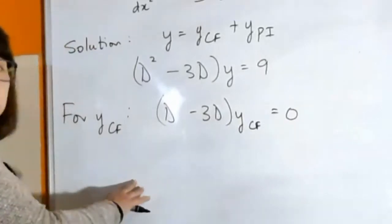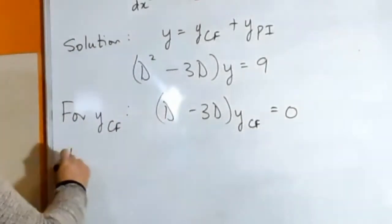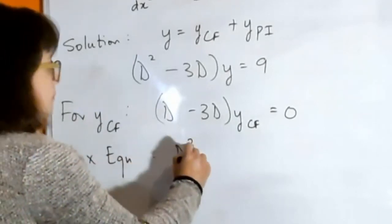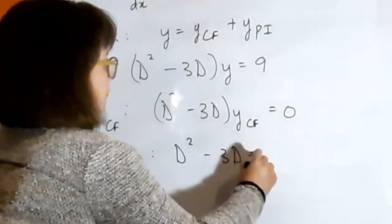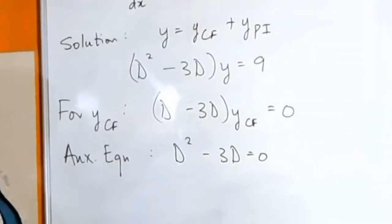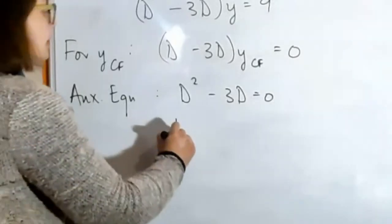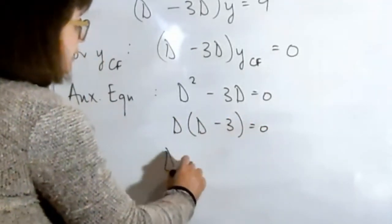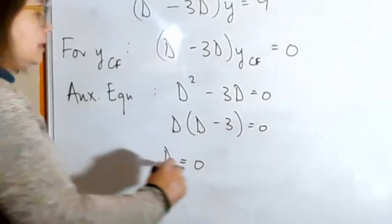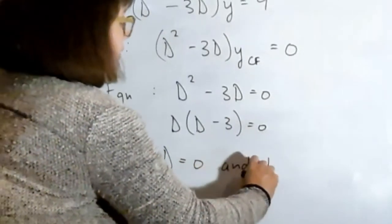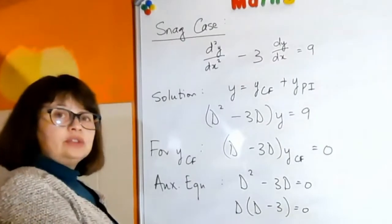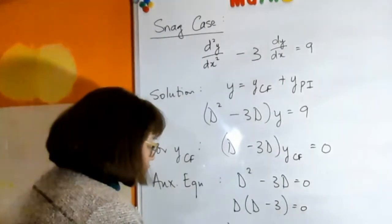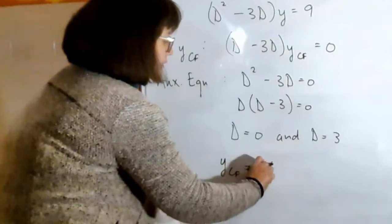Set that equal to zero from the auxiliary equation. We can get the solution for your complementary function. In this case, you can factorize, which means that d is either zero and d is three. So you have values for your roots which are real and different, which means your complementary function is going to look like this.